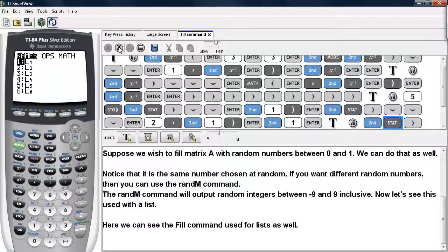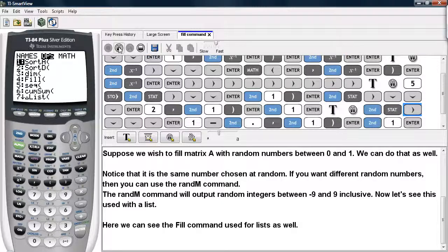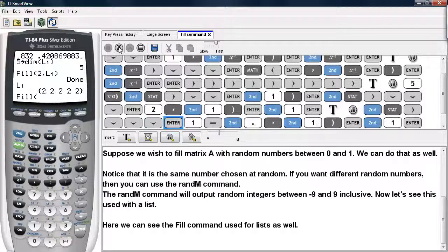So we go back under lists, go under ops, and scroll until you get to Fill. So if I did 1 minus i, second decimal for i, and I call up list 1 here.